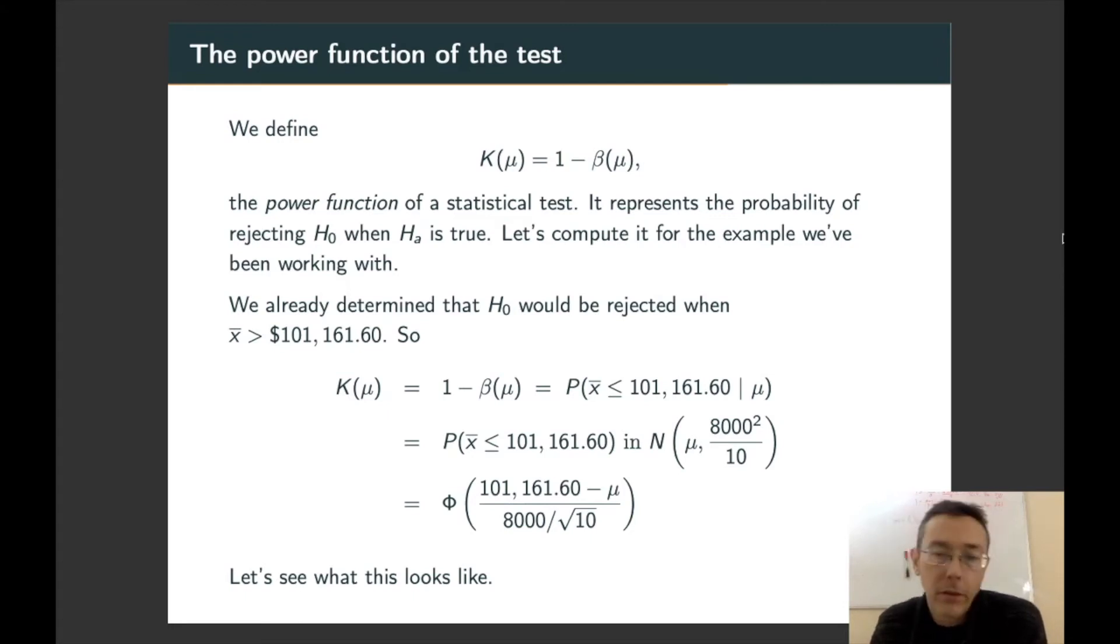So let's continue with this example and actually compute it. The rejection region is completely independent of what the actual population mean is. It depends only on the null hypothesis assumption about the population mean. So we know that we're going to reject the null hypothesis when x-bar is greater than $101,161.60.